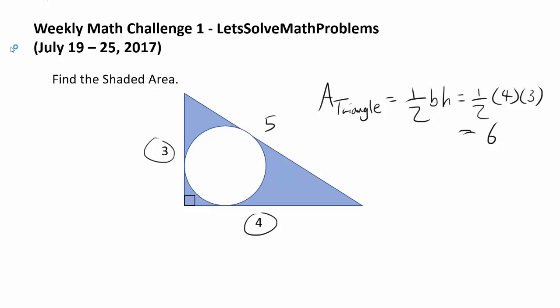So if we can find the area of the incircle, we can subtract it from the area of the triangle and we should have our answer. And to find the area of a circle, we need to find the radius of the circle. So how can you find the radius? And there are two ways of doing it and I am going to show you both ways.